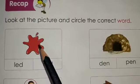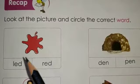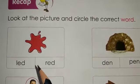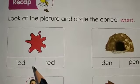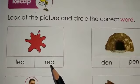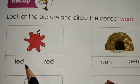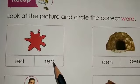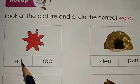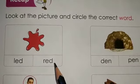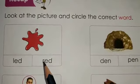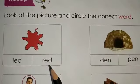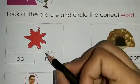What you have to do: first you will identify the picture, then from the two given words you will circle the correct one. The two words given are L-E-D, led, and R-E-D, red. Both are E-D sound words, which we have already studied. The picture shows colour red, so we are going to circle the word red.